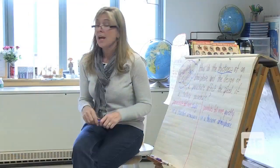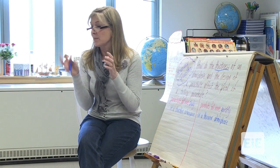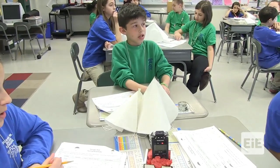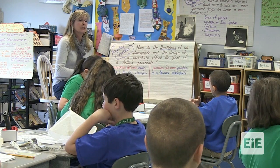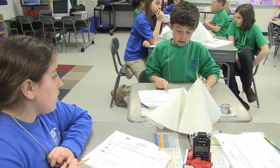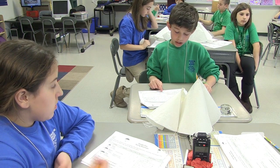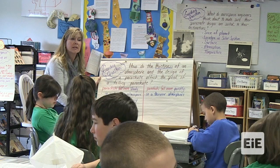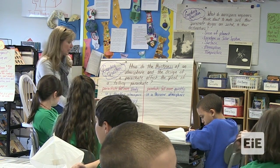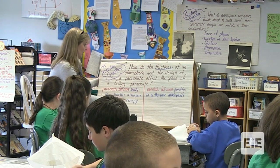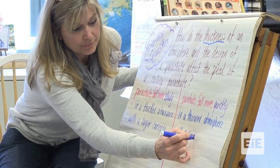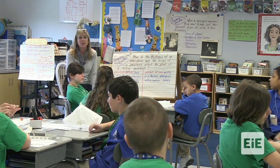That was a busy activity. Let's see what we learned about the materials and variables we tested. The canopy size group: what did you find? The small one fell the fastest, the large one fell the slowest — we think it fell the slowest because since it was so big, it caught a lot of drag, which made it fall slowly. So larger canopies fall more slowly, and parachutes with a smaller canopy fall more quickly. Agreed.